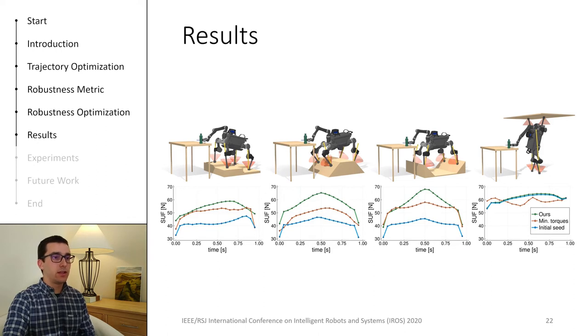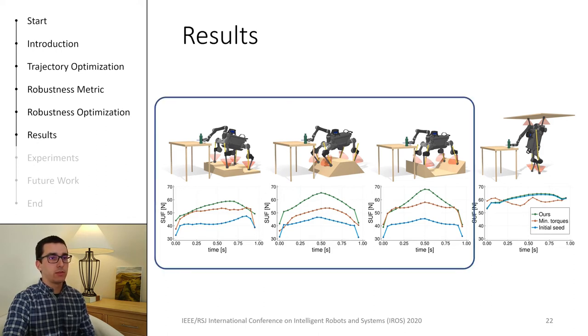First, let us analyze these three scenarios. We can see that both the objective functions we tested were able to improve the robustness of the initial trajectory. However, we can see that using our metric we can achieve better robustness than the minimization of torques. These observations were true for all these three scenarios.